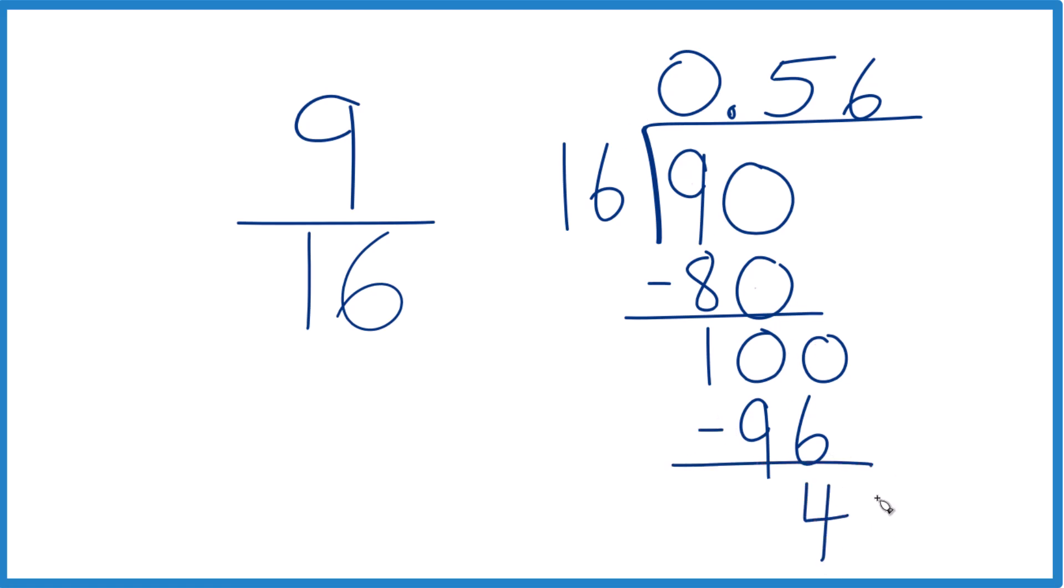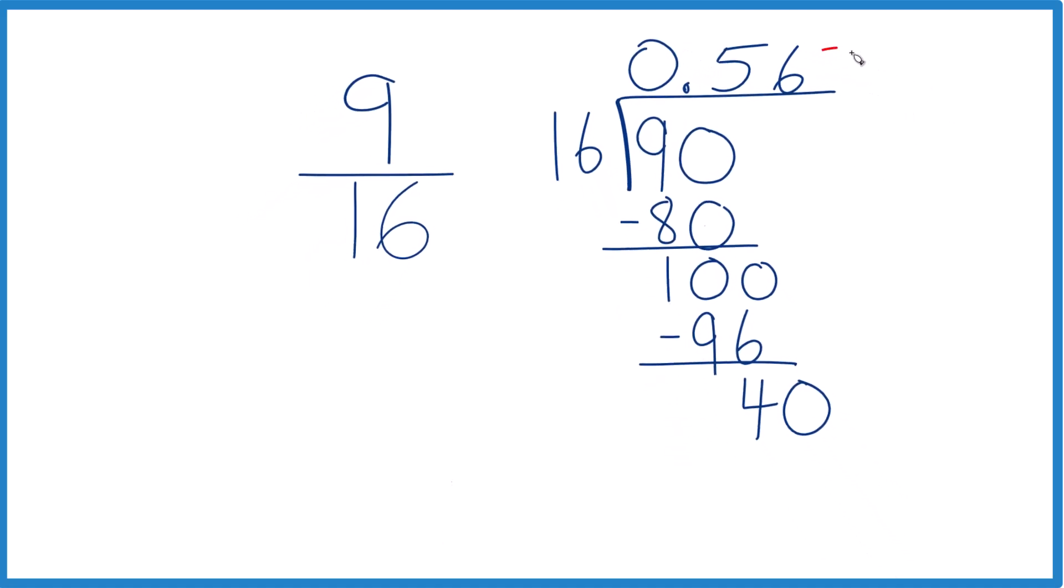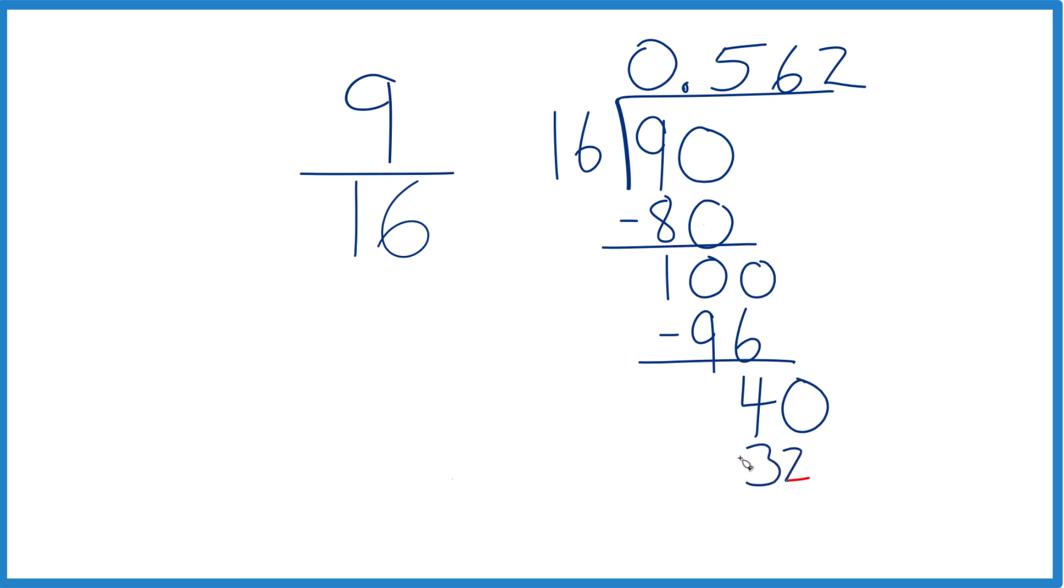Doesn't go into 4, call it 40. We move over 1, and now 2 times 16, that's 32. We subtract, and we get 8, call it 80, we're going to move over 1 here.